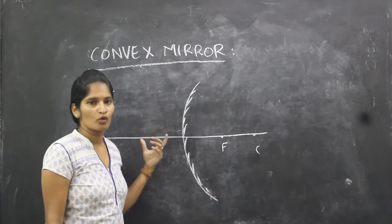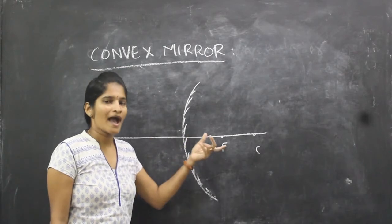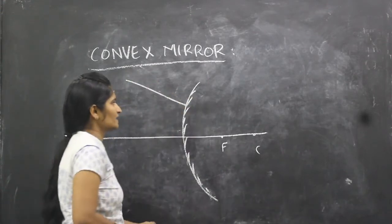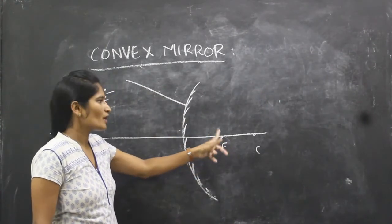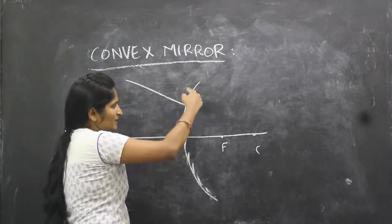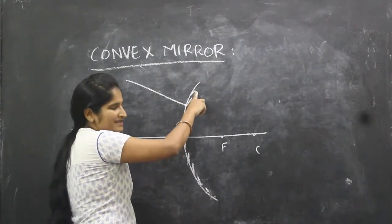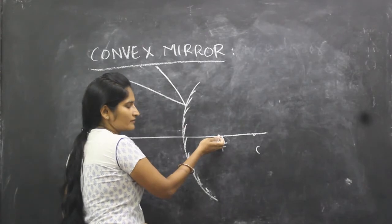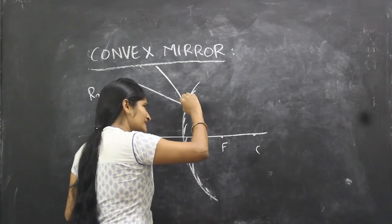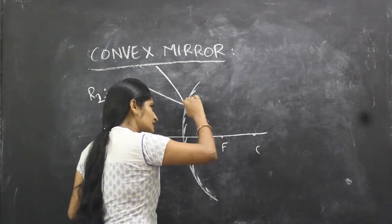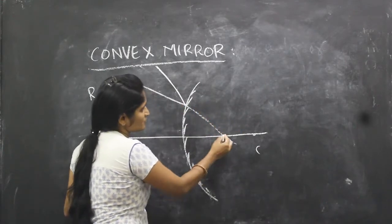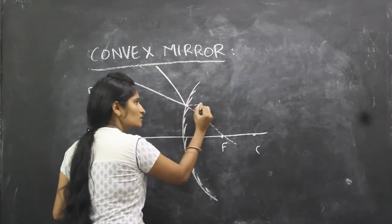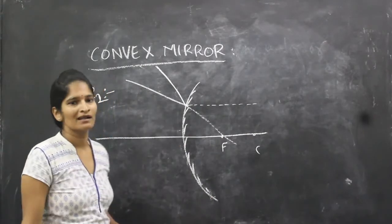The second ray is R2. What is R2? It is the ray travelling through the focus. After reflection, it should travel parallel to the principal axis. The ray comes toward the mirror passing through focus, and when it meets the convex surface it gets reflected and diverges. I extend the ray backward so that it passes through focus, and from that point after reflection it travels parallel to the principal axis.